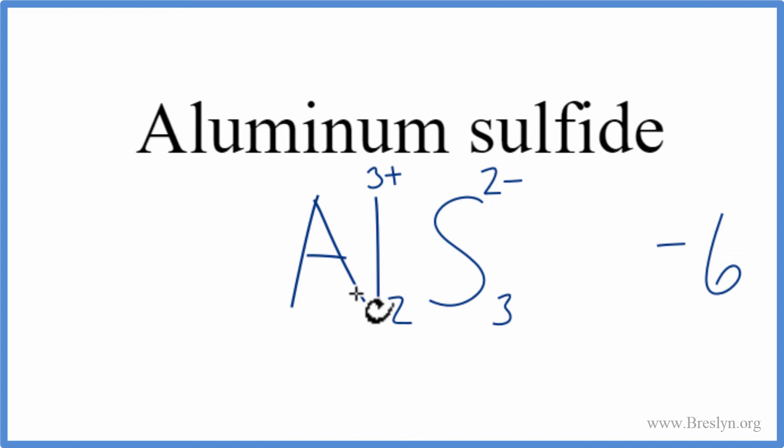the aluminum. We have two aluminum atoms, each one's 3 plus. 2 times the 3 plus, get a plus 6 over here. So plus 6, minus 6, that adds up to 0. So this is the correct formula for aluminum sulfide,